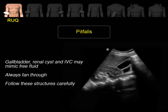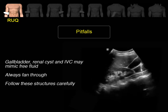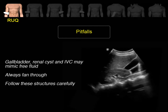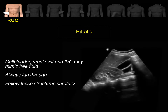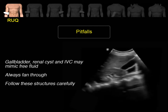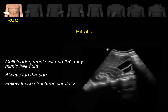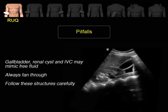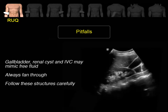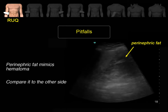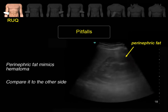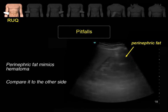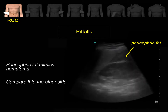Fluid-filled structures such as gallbladder, renal cysts, and IVC may look similar to free fluid. Always fan from one end to another and follow these structures carefully. Free fluid appears pointy, in contrast to other rounded structures. Perinephric fat mimics hematoma, but this fat has some echogenicity and correlates with fat tissues in other areas of the body.